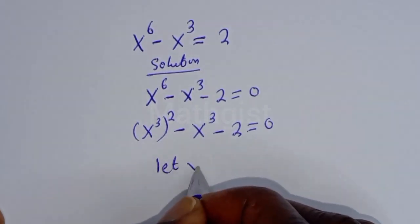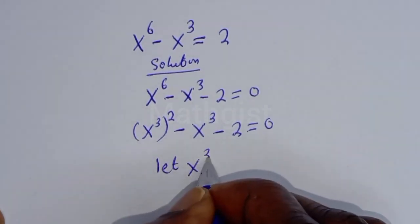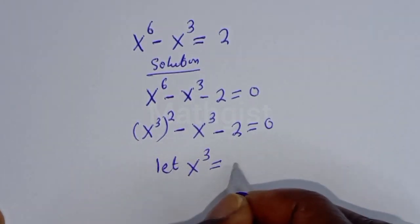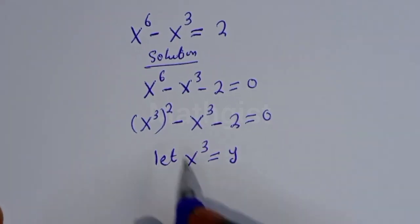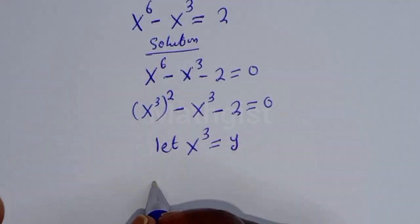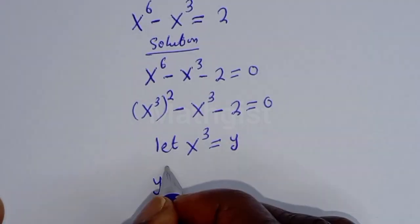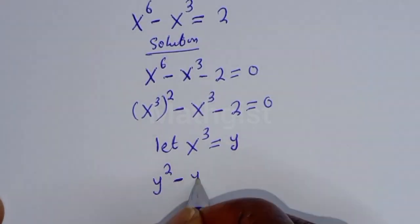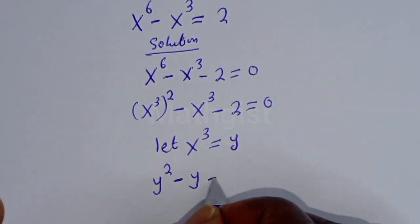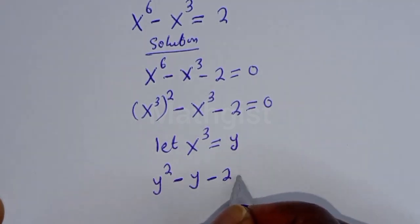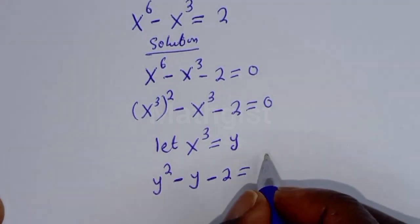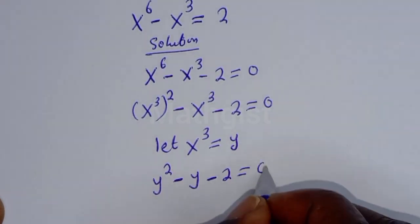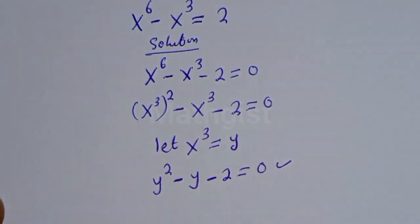Let s raised to power 3 be equal to y. Then this becomes y squared minus y minus 2 is equal to 0. This is a quadratic equation.